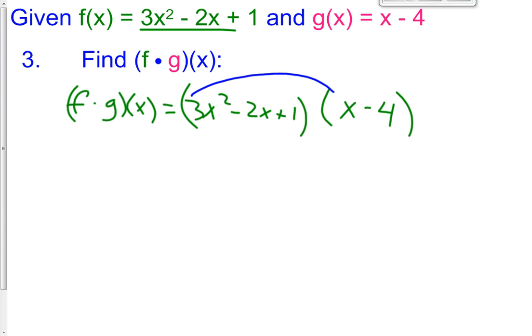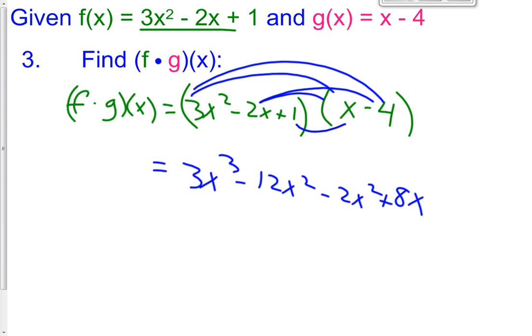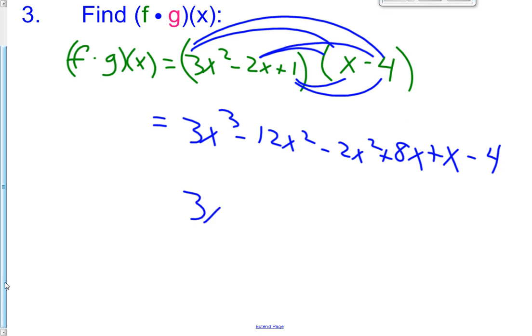So now we're simply going to multiply a trinomial times a binomial. Let's take 3x squared by the binomial, and we would get 3x cubed minus 12x squared. Let's take a negative 2x by the binomial, and then we would get a negative 2x squared and a positive 8x. And then we'll take the 1 times the binomial, and we're going to get positive 1x and a negative 4. So our answer then becomes 3x cubed minus 14x squared plus 9x minus 4.